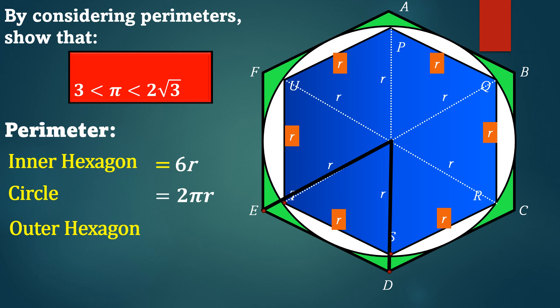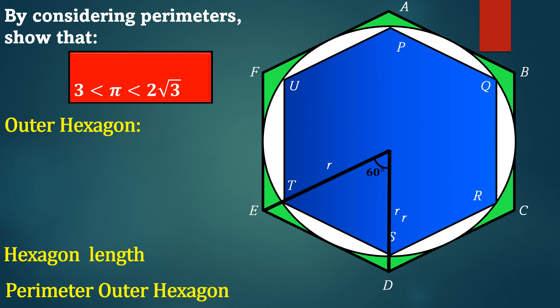Before we tidy up the diagram, let's recall that this angle here is 60 degrees. Because when we divided the hexagon into 6 equilateral triangles, the angle at this point is 360 divided by 6, which is 60 degrees. All of these angles are 60 degrees. Now, let's tidy up.